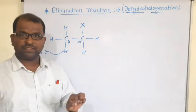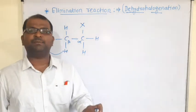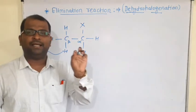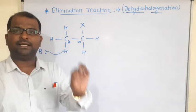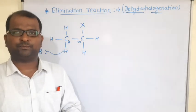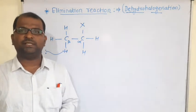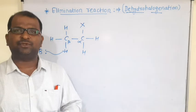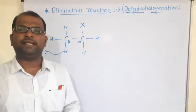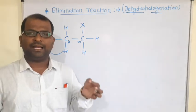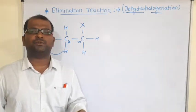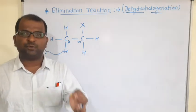The base abstracts the hydrogen — this involves what is called alpha carbon and beta carbon. In organic chemistry, we have a very simple concept of alpha and beta carbon positions that you need to understand in order to follow the elimination mechanism.